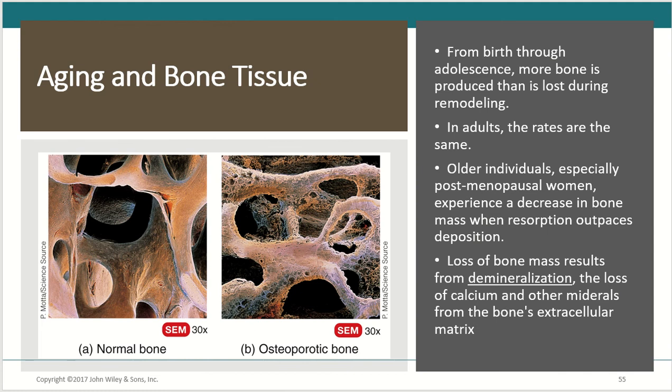Looking at how bones change as we age: from birth through adolescence, more bone is produced than is lost during remodeling, which makes sense because we're still growing. As an adult, the rate is about equal — bone resorption versus bone deposition is roughly the same. Older individuals, especially post-menopausal women, experience a decrease in bone mass when resorption outpaces deposition. This loss of bone mass results from demineralization — the loss of calcium and other minerals from the bone's extracellular matrix.